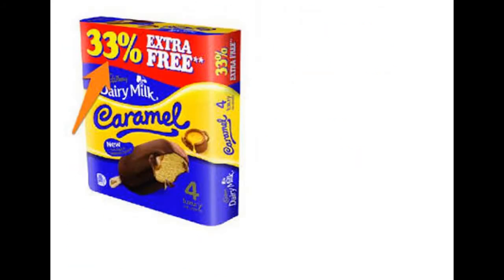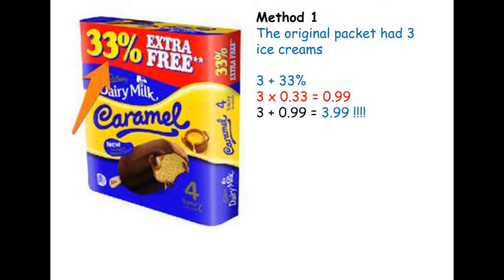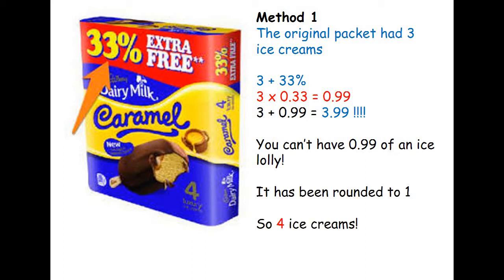Now let's look at this one. We have 33% extra free on a box of ice lollies. The original packet had three ice creams, so we're going to increase three ice creams by 33%. Turn 33% into a decimal and multiply: three times 0.33 gives us 0.99. So 33% of three is 0.99. We add that on — 3.99 — which rounds up to 4. So there are four ice creams in the box.